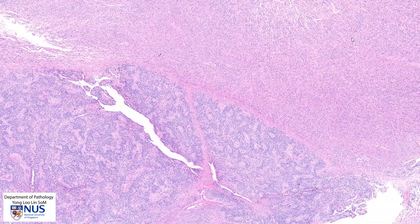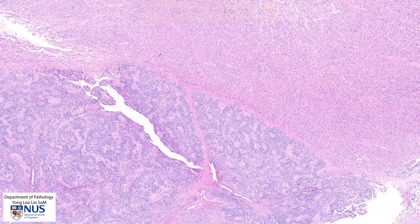Hello, this is a virtual microscopy slide taken from an ependymoma in the cerebellum in a four year old child. Looking at relatively low magnification, we can see that the tumor appears to have two different looking areas. On the top right is a slightly pinker area and on the bottom left we have this very interesting bluer area with a kind of intriguing repetitive pattern.